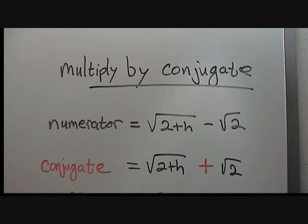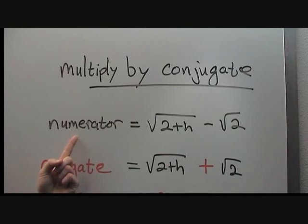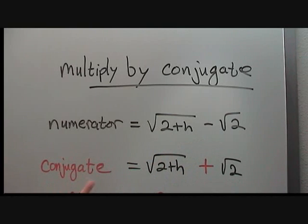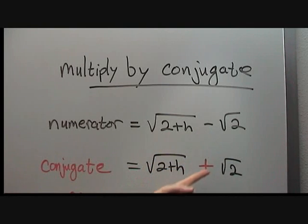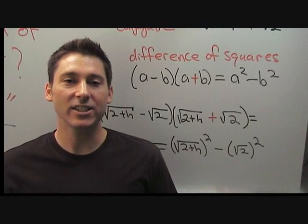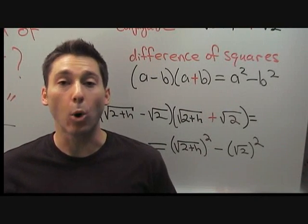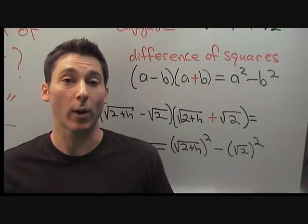One very common and powerful way to get rid of a square root is something called multiply by the conjugate. In our situation, what this means is we start with the numerator and we need to form what's called a conjugate expression. All that means is you take this minus sign and change it to a plus. This trick relies upon a very important piece of information, which is the difference of squares.